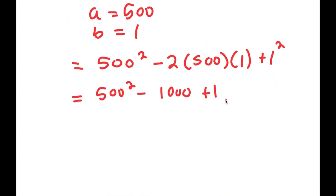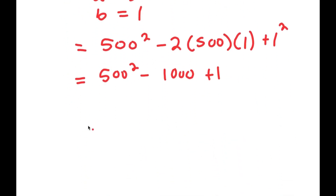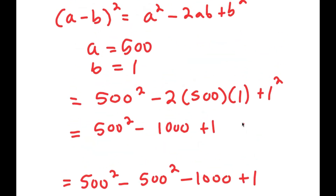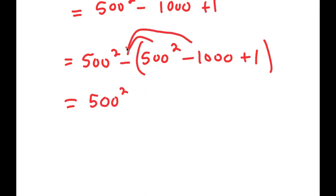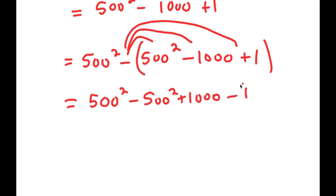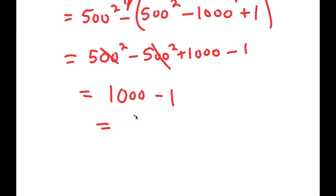Now I replace 499 squared with this expression, getting 500 squared minus (500 squared minus 1000 plus 1), all in parentheses. Distributing the negative sign: negative 1 times 500 squared is negative 500 squared, negative 1 times negative 1000 is positive 1000, and negative 1 times positive 1 is negative 1. The two 500 squared terms cancel, leaving 1000 minus 1, which equals 999.